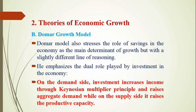The second celebrated model in growth literature is the Domar model. The Domar model also stresses the role of savings as the main determinant of growth, but reaches this conclusion with a different line of reasoning. He emphasizes the dual role played by investment in the economy: investment has effects on two broad sides — the demand side and the supply side. On the demand side, investment increases income through the Keynesian multiplier principle, raising aggregate demand and output.